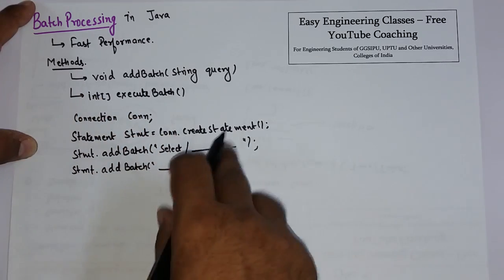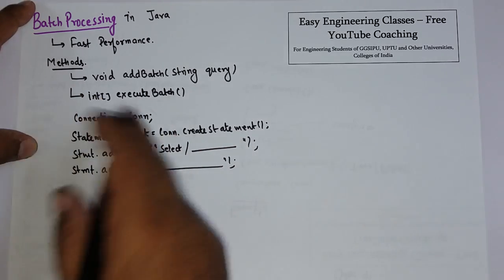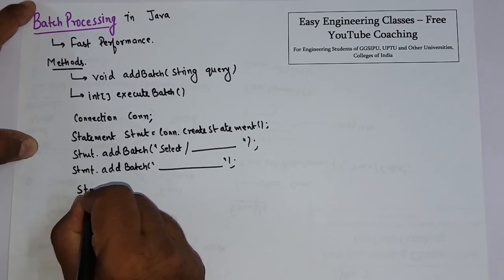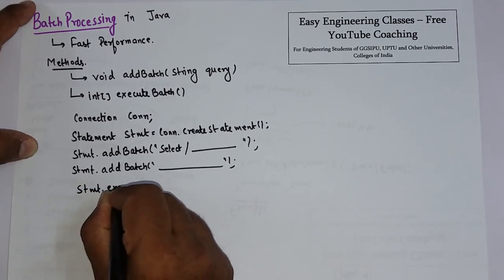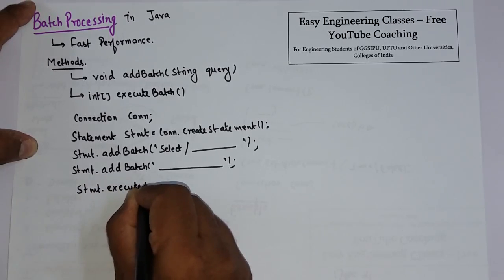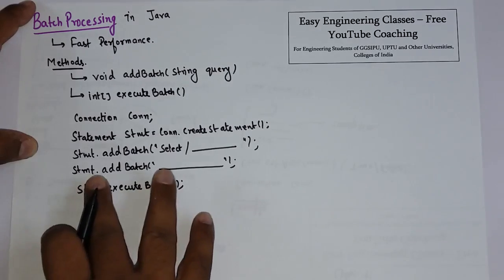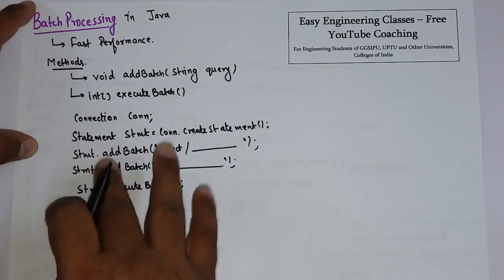Now to execute both queries simultaneously or at one go, I will use executeBatch. So just write stmt.executeBatch(). This will now execute both queries in a single go.